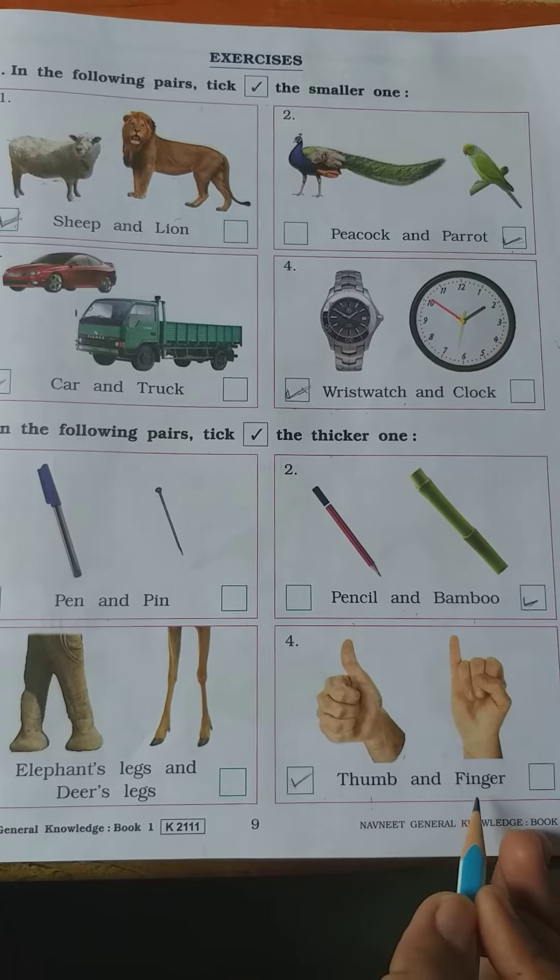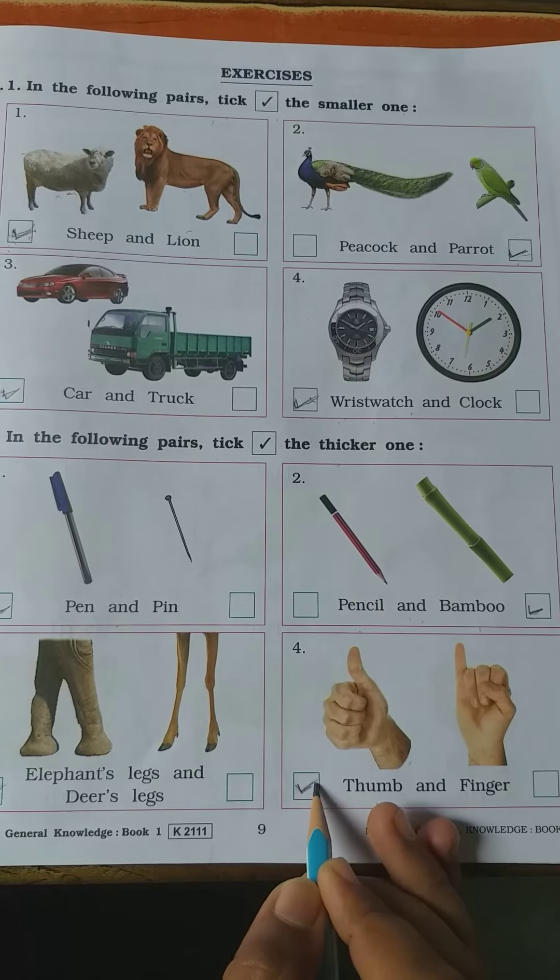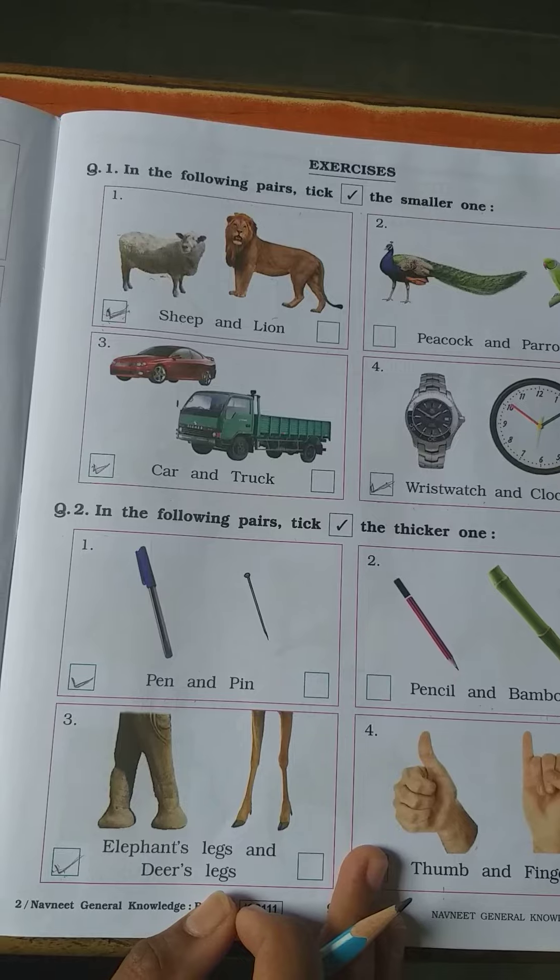Number 4: thumb and fingers. Thumb is thicker, tick in thumb. Okay, students. Bye-bye.